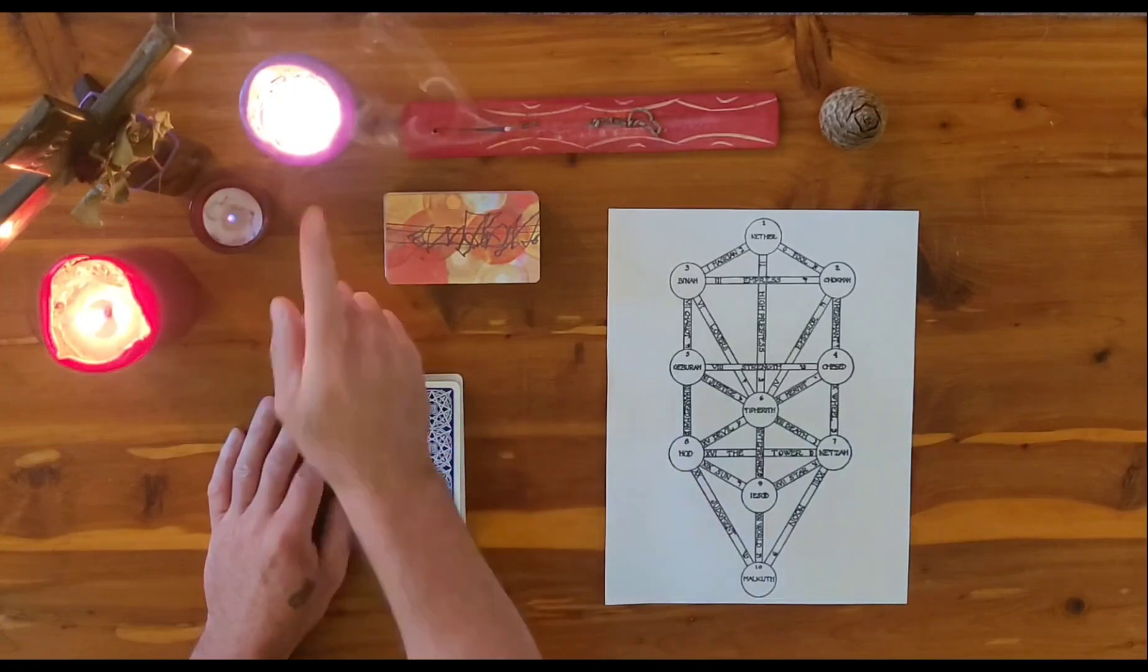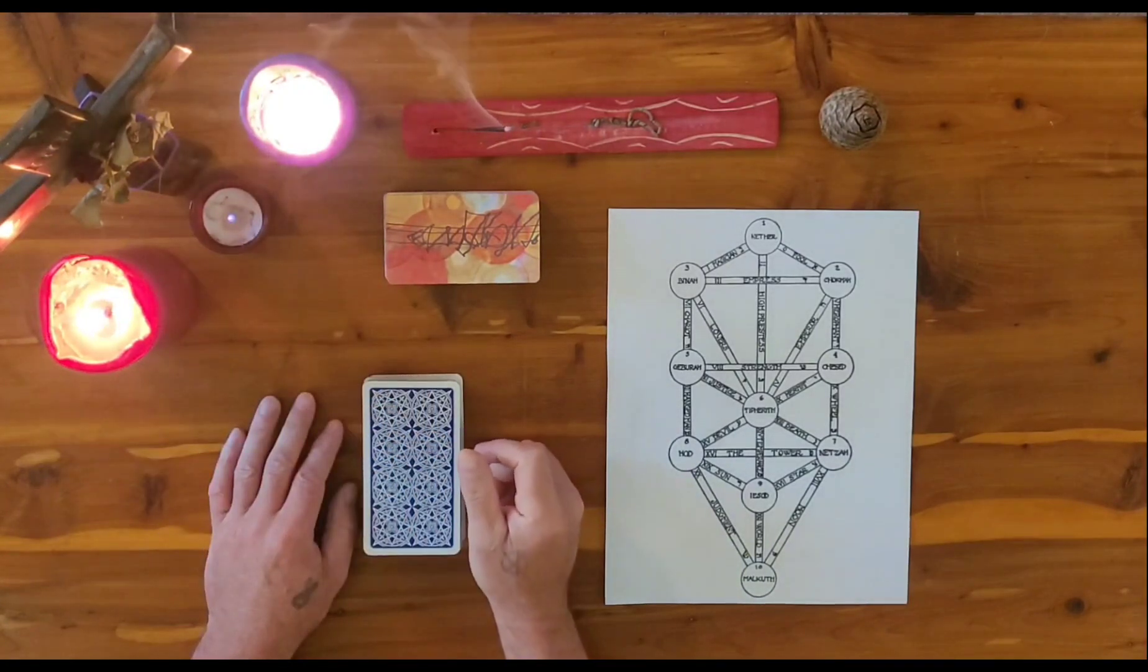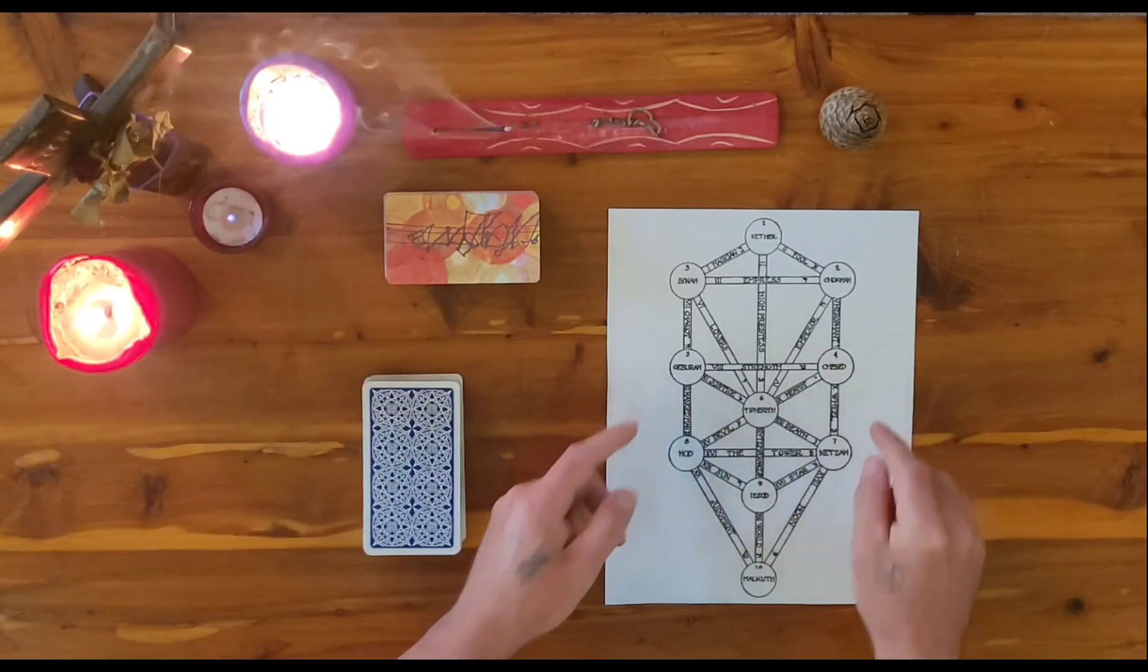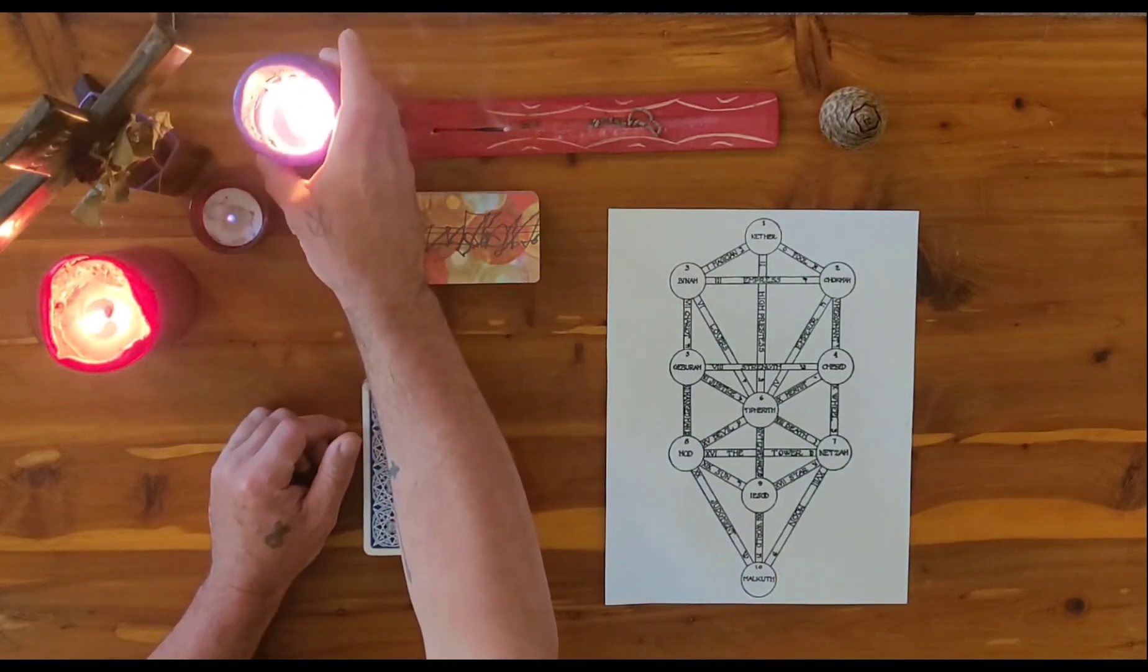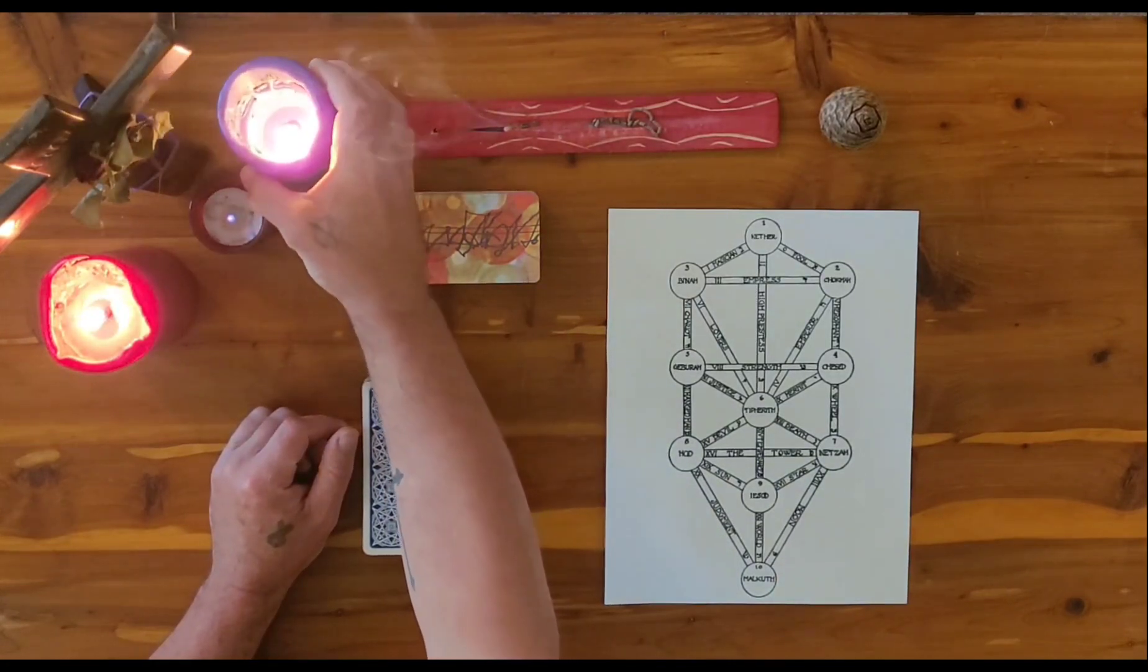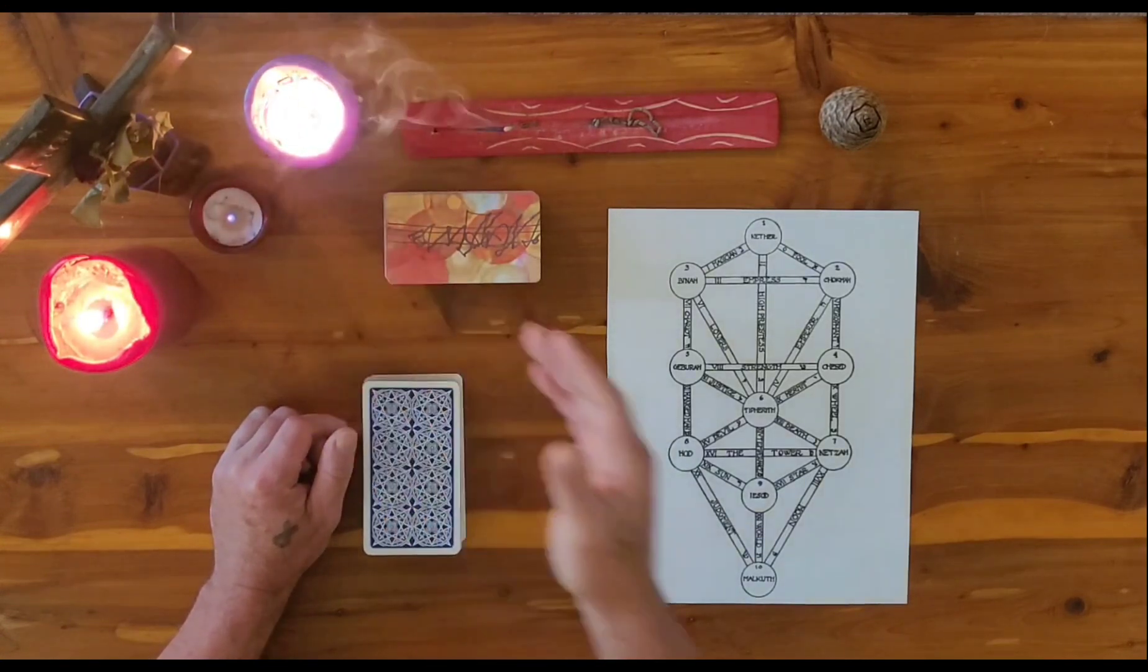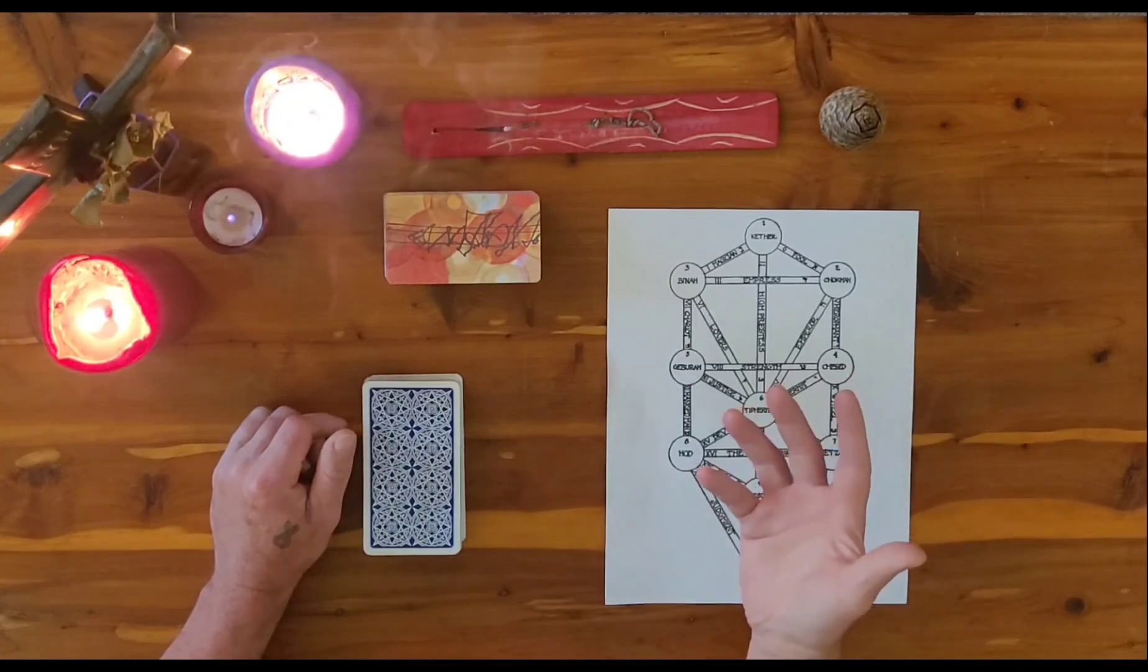Moving on, the two candles that sit on the outside are also a representation of the two outer pillars of the Tree of Life. This candle, when it's lit, looks purple but when it's out it's actually blue. And the blue is to represent the right pillar, mainly Chesed, which is mercy.